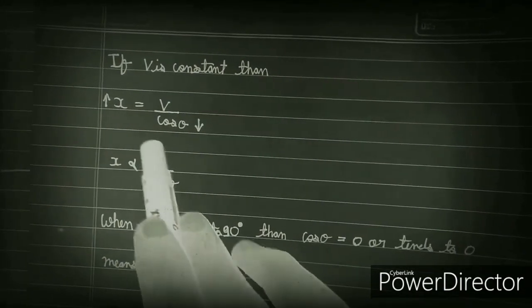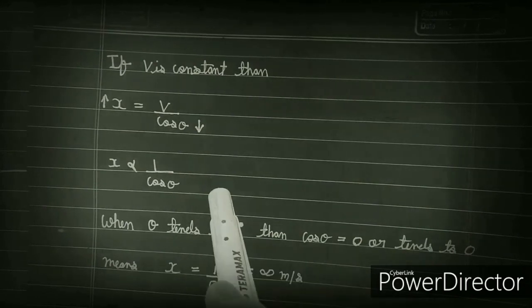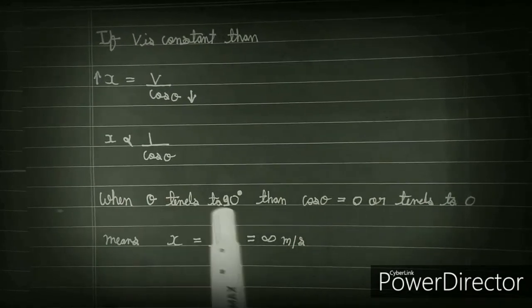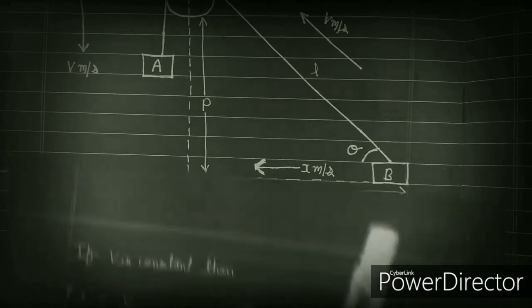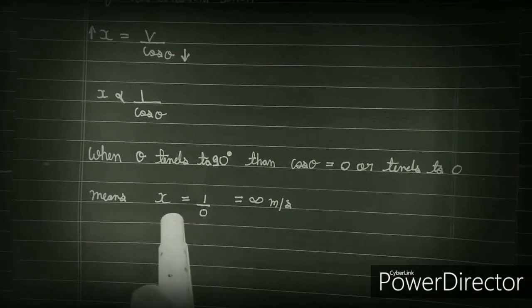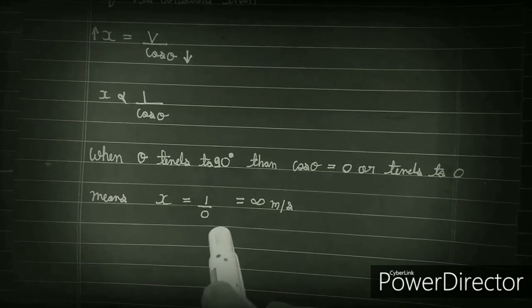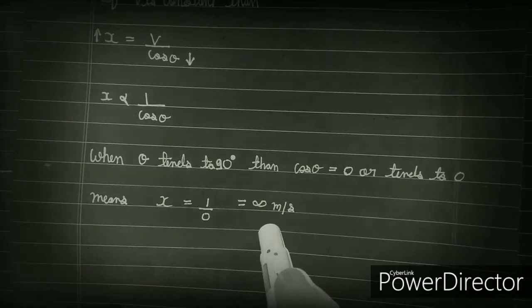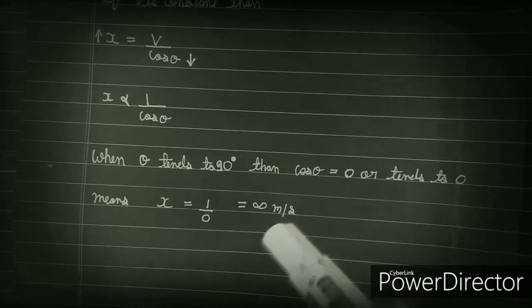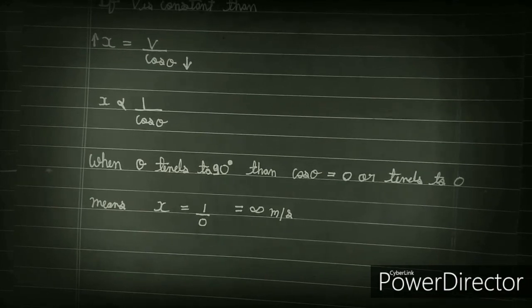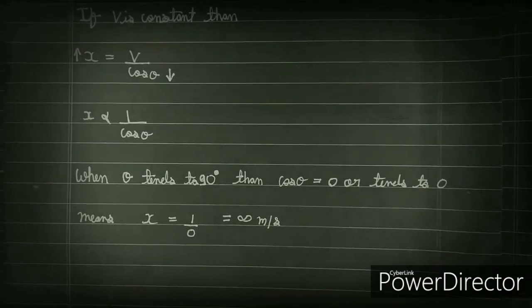So x is inversely proportional to 1/cos θ. cos θ continues to decrease as the angle increases. My question is: when θ tends to 90 degrees, cos θ also tends to 0. And when cos θ tends to 0, then x tends to infinity — x will be infinite meters per second. This is theoretically possible here, but Einstein said it is never possible. This is my doubt.